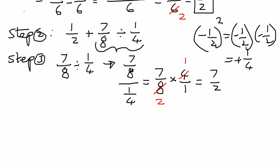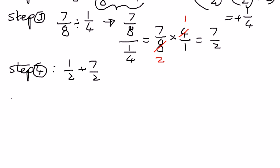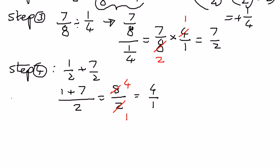In step 4, we have 1/2 plus 7/8 divided by 1/4, where 7/8 ÷ 1/4 simplified to 7/2. These two fractions now have the same denominator of 2, so we combine the numerators: 1 plus 7 equals 8, divided by 2. Since 8 is a multiple of 2, we reduce: 8/2 equals 4. So this complex fraction, using the order of operations, reduces to 4.